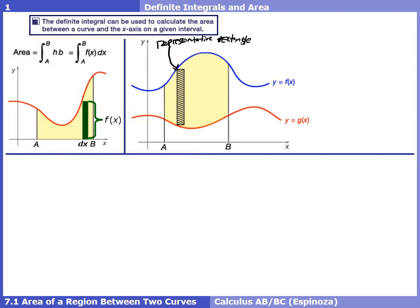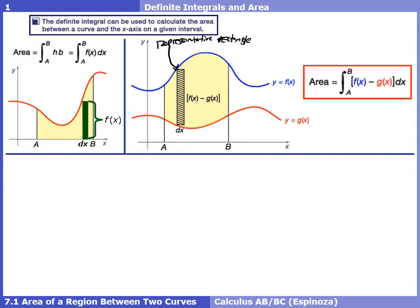The base of our representative rectangle is still a little change of x, or dx. How do we find the height? In this kind of problem, the distance between function F and G is found by a simple matter of geometry — we take the top function and subtract away the bottom function. Once we know that, we set up the integral. The area of a rectangle is still base times height: the base is dx, the height is F(x) minus G(x). That's how we find the area between two curves.